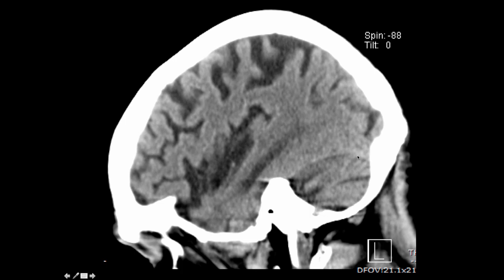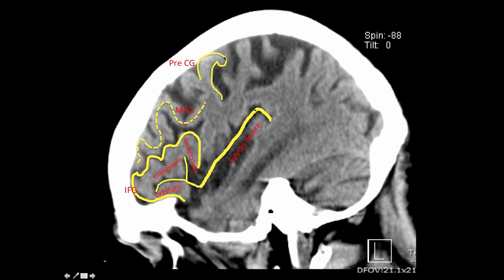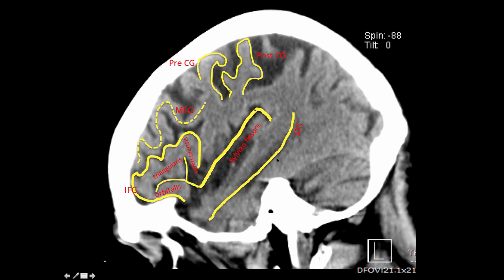Moving to the lateral surface of the brain, we have a deep fissure called the lateral or Sylvian fissure, which separates the frontal and parietal lobes from the temporal lobe. The most lateral gyrus in the frontal lobe is the inferior frontal gyrus, which appears like a molar tooth or triangle — also called the triangular gyrus. It is divided by the most anterior part of the Sylvian fissure into the orbitalis, triangularis, and opercularis. Above that is the middle frontal gyrus — zigzag almost like the Mississippi river — which joins the precentral gyrus. The precentral gyrus forms like a hook held by the postcentral gyrus, called the hook sign. Just below the Sylvian fissure we have the superior temporal sulcus, with the superior temporal gyrus above and the middle temporal gyrus below.